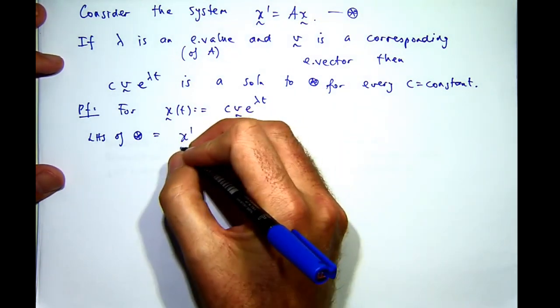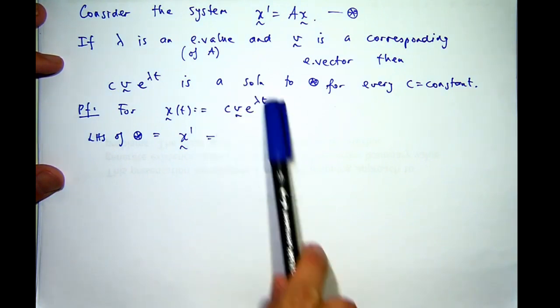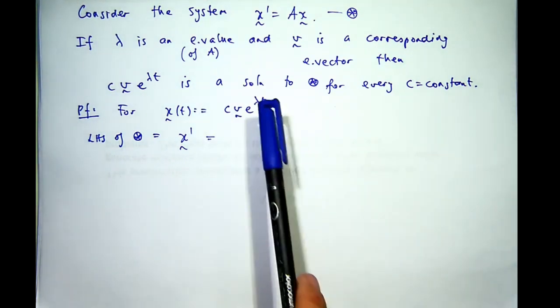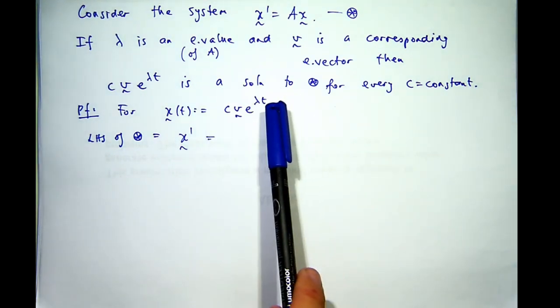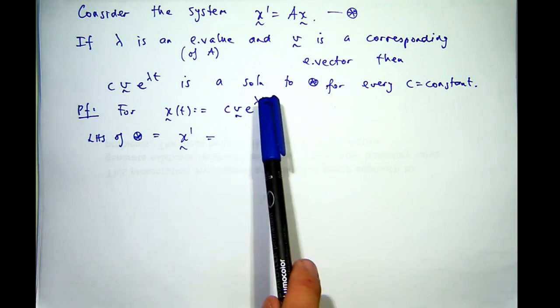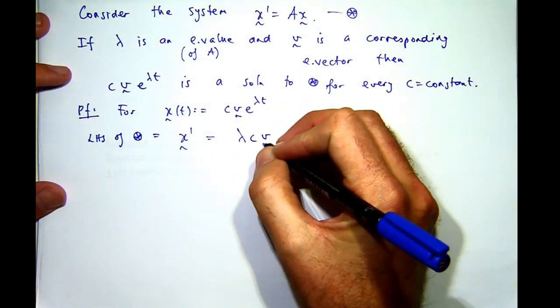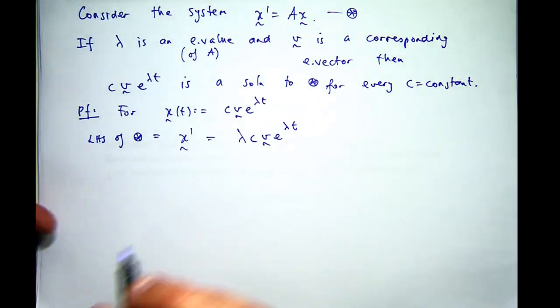Okay, so x dash. So let's differentiate this with respect to t. So if we differentiate this with respect to t, we're essentially just differentiating an exponential function. So the lambda will come to the front, and that's the derivative of our function.